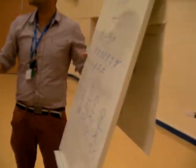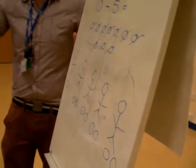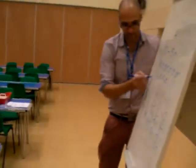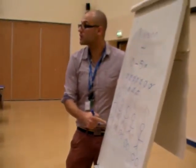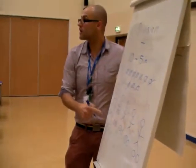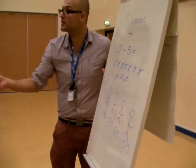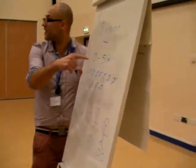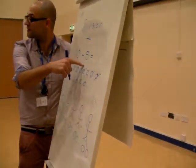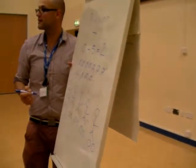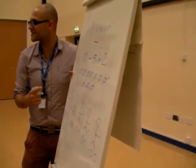We then ask the children to tell us: how many does each person have? Well, that person has two — so each of these people have got two sweets. So 10 divided by 5 equals 2. Does that make sense?